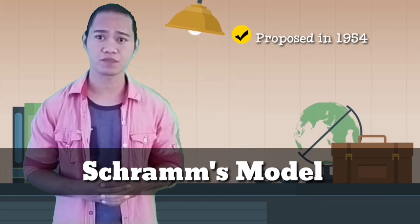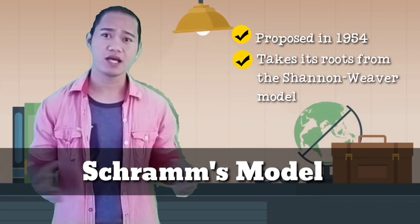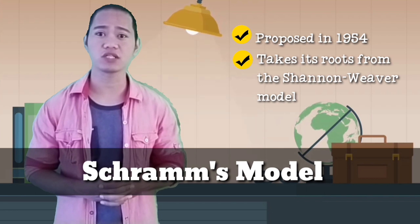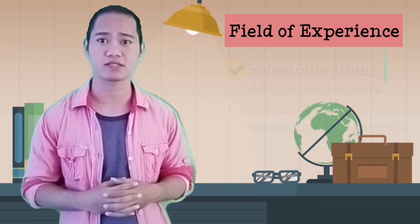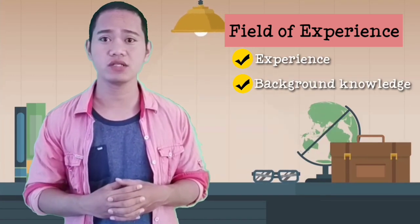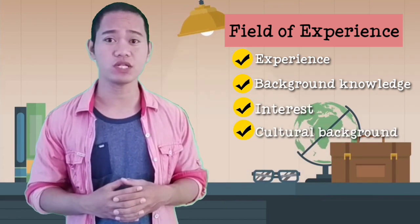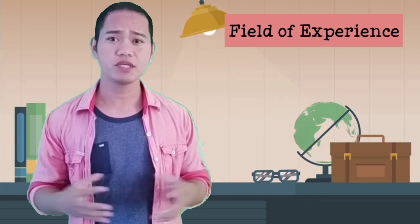The third model of communication is that of Schramm, which was proposed in 1954. This model of communication has its roots from the Shannon Weaver model itself. However, unlike the Shannon Weaver model, this model of communication introduces the concept of feedback. Also, one important element introduced in this model is what Schramm calls field of experience, which refers to anything both the speaker and the receiver or the communicators bring into the communication process. This could be an experience, background knowledge about the subject or the topic of conversation, interest, cultural background, and even religious affiliation.